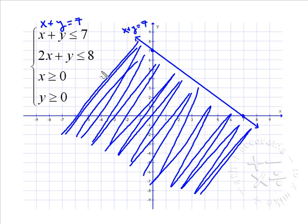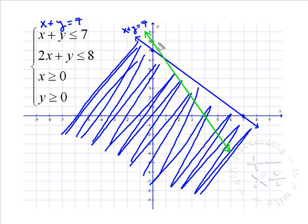Now let's do our next line: 2x plus y equals eight. Notice when y is zero, x would be four, and when x is zero, y would be eight. This will also be a solid line because of the equal to. So let's connect those two points — this line is 2x plus y equals eight.